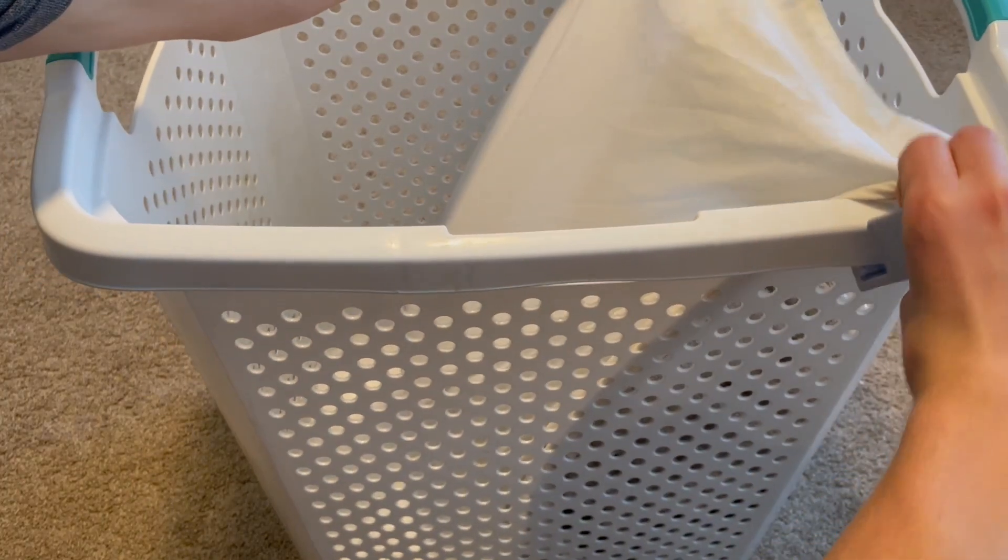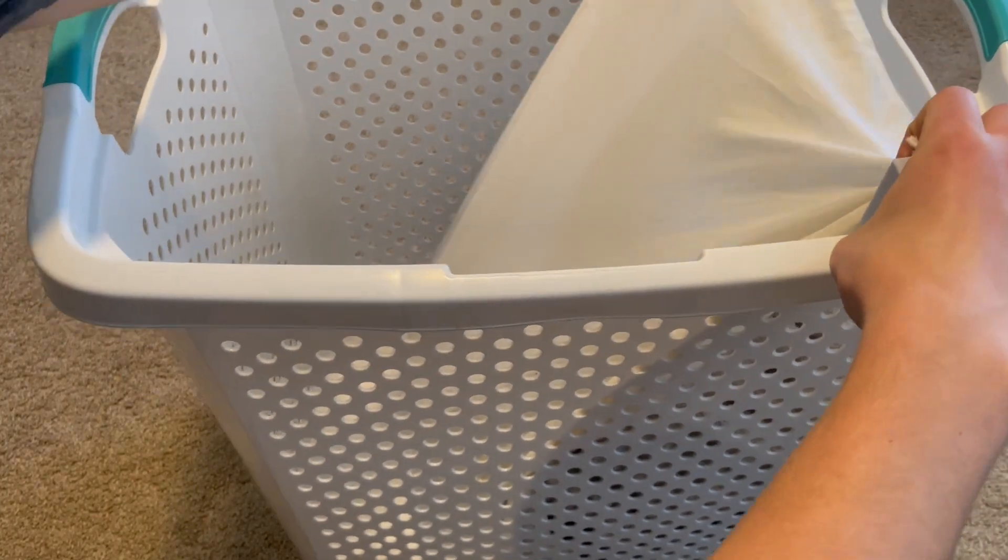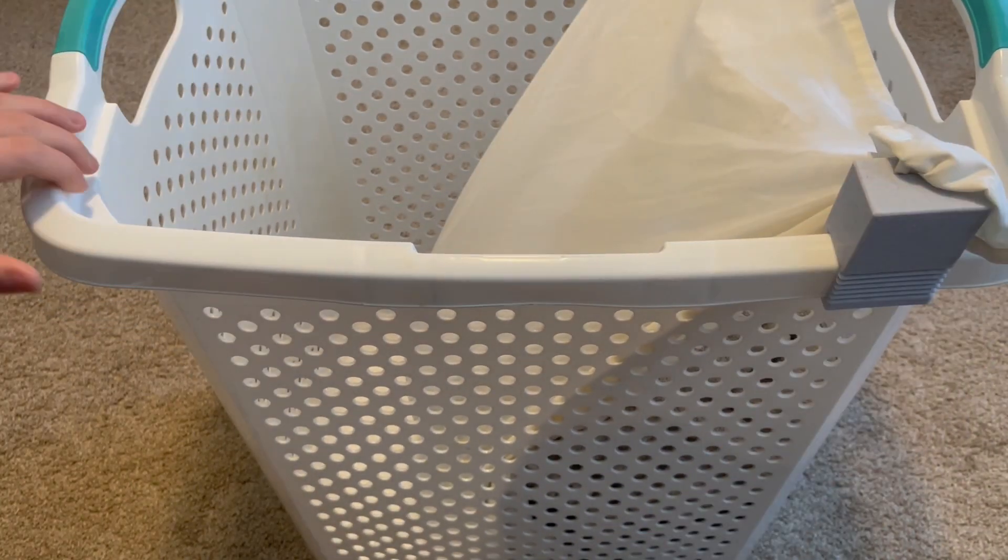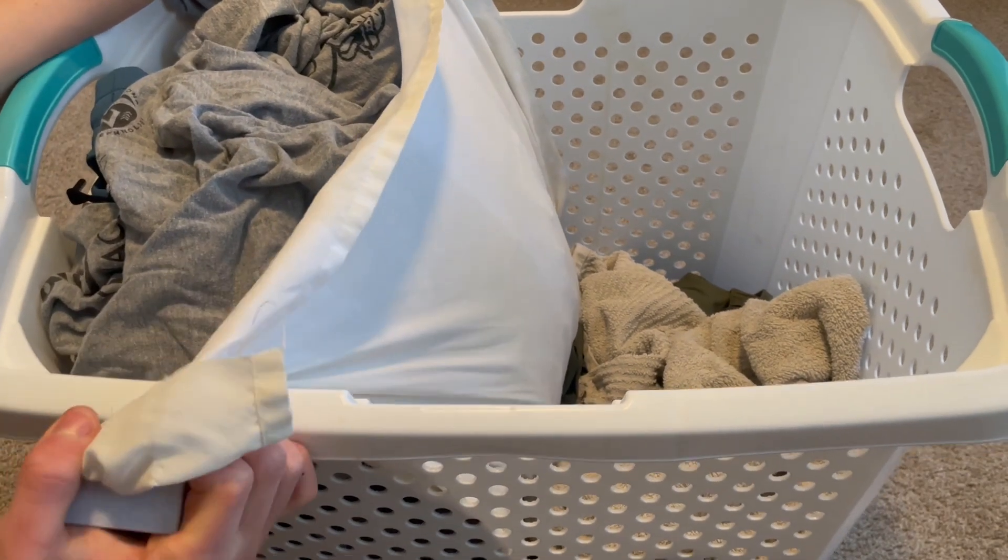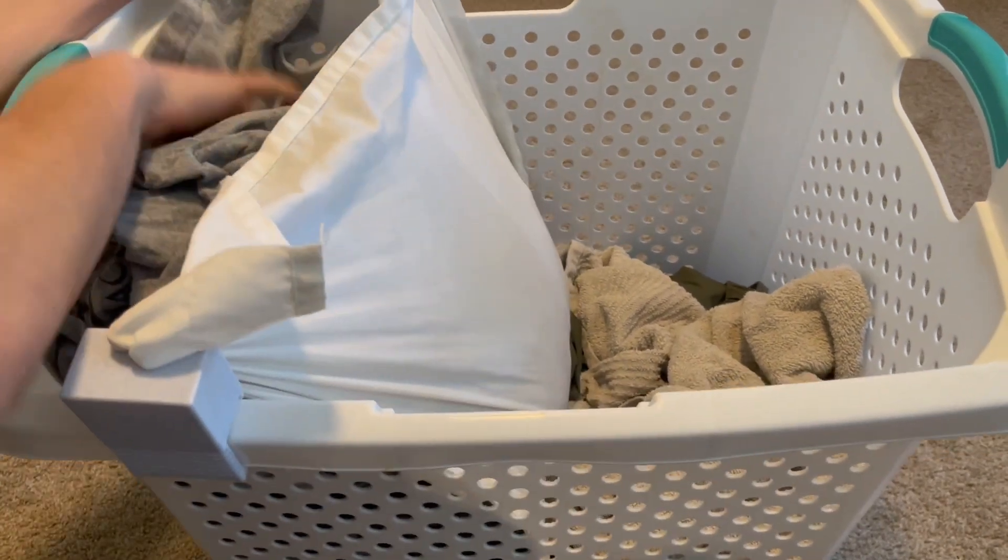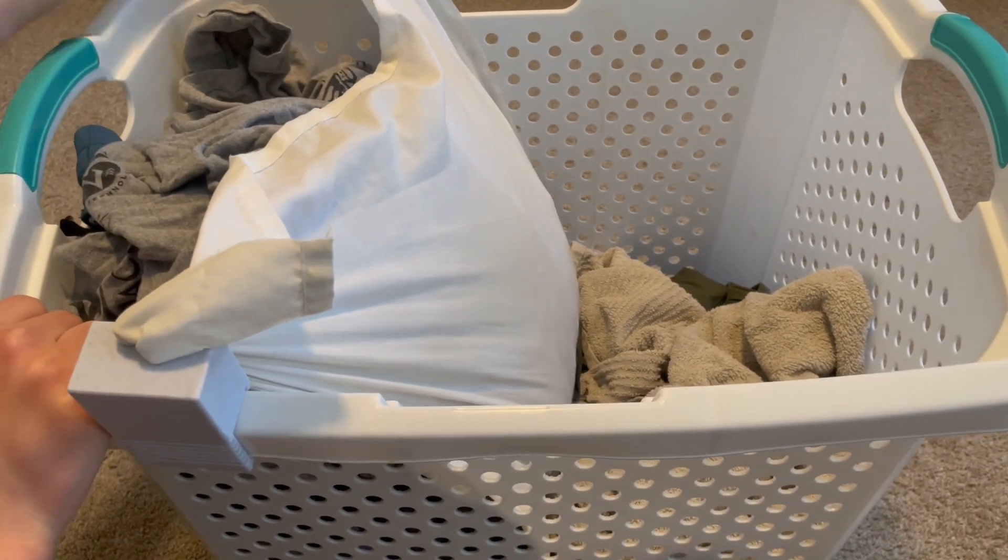Now instead of using an ever-growing amount of IKEA bags to transport my clean laundry, I can simply move the divider in my hamper to one side, throw my laundry into the basket without the need to worry about a bag folding in on itself, and then replace the divider so that I can continue using my hamper for dirty laundry even while I have clean laundry waiting to be folded.